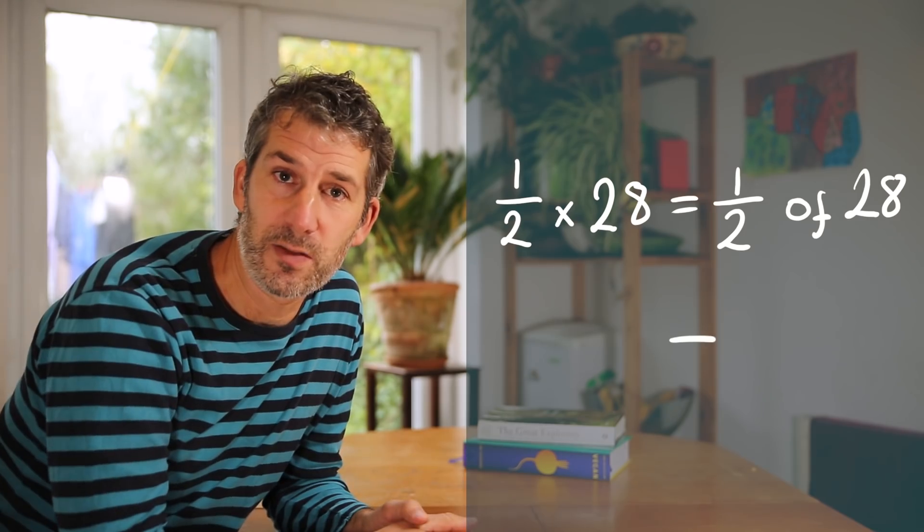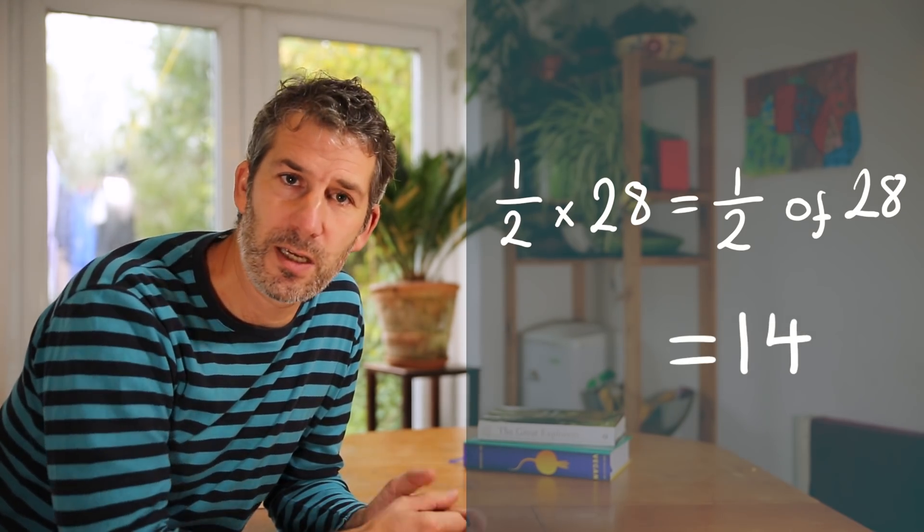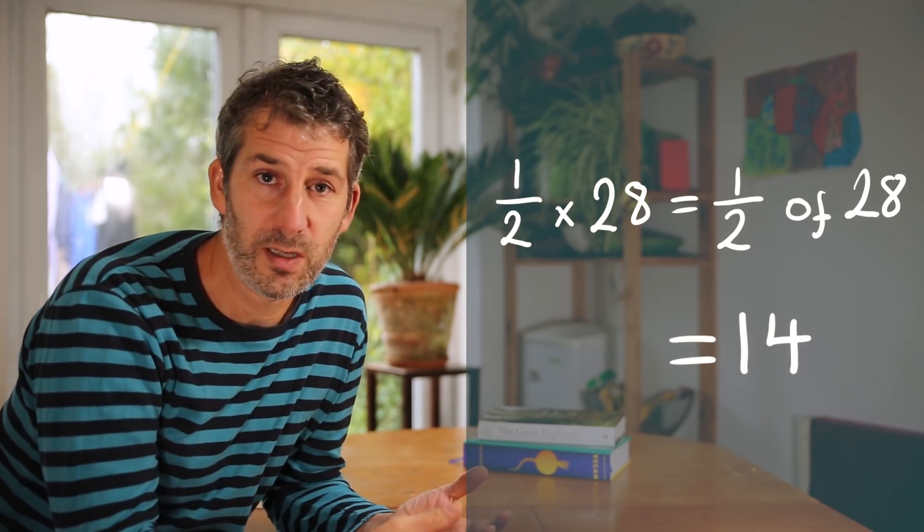So a half of 28 is 14. Similarly you can think of a half times a hundred as a half of a hundred or a third times 83 as a third of 83.